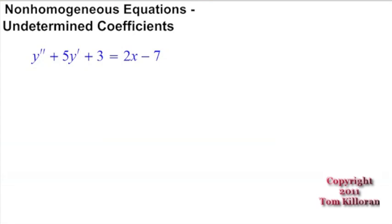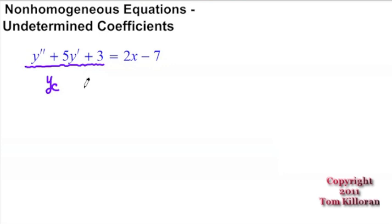If we're going to work with this, there are two pieces we're going to be looking for. The one we worked with before, we're going to call the homogeneous solution, y sub c. Some textbooks call that complementary, but I like calling it characteristic, because that's usually when we set up the r squared plus 5r plus 3. So characteristic or complementary, it really doesn't matter — it's the solution of the homogeneous differential equation.